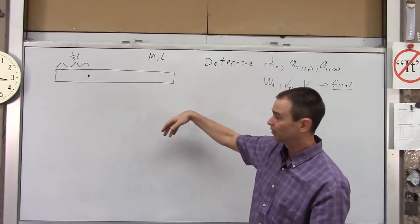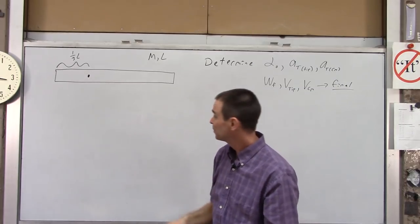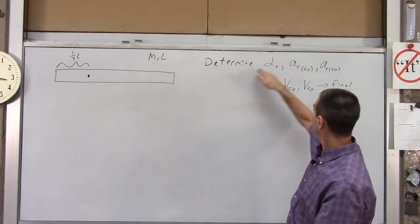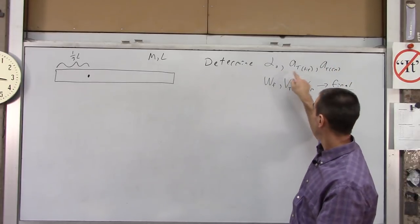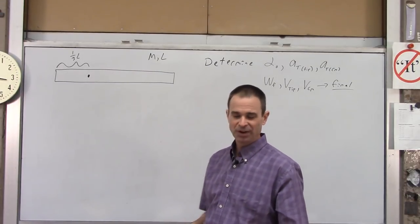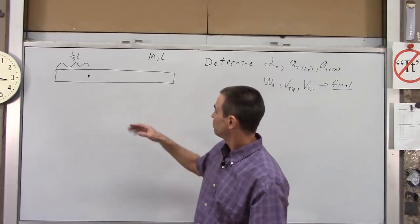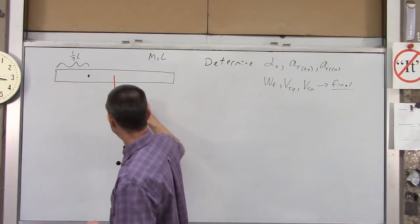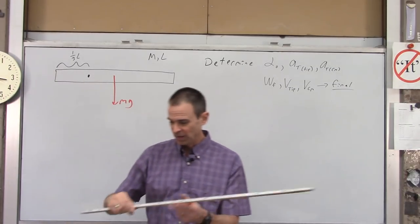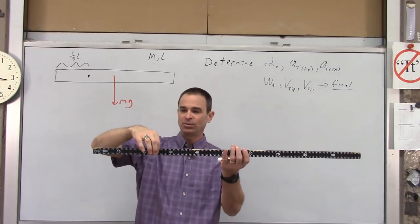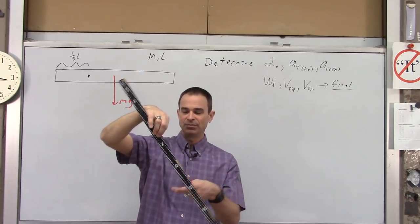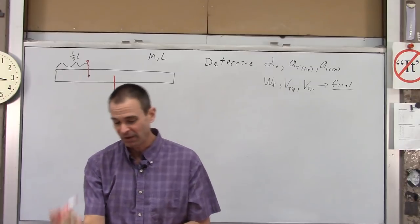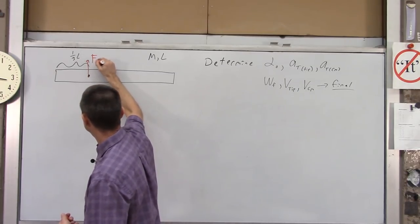It's a pretty simple picture. You've got a meter stick pivoted one-third the distance from its end. The first step is to draw a free body diagram. You're going to have the force of gravity acting at the center of mass of the rod — that's mg. And then you have the pivot. If you don't put any force on the pivot, the meter stick will just drop. So your fingers have to pull up a little bit. There's going to be some force there — I'll call it Fp for pin.